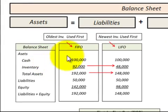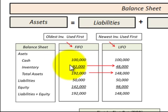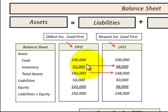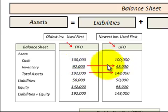Let's look at our balance sheet comparison between FIFO and LIFO. With FIFO, we used our oldest inventory first with the lower costs, so our ending inventory on our balance sheet would include our newest inventory with its higher costs. With LIFO, we used our newest inventory first with its higher costs, so the ending inventory on the balance sheet would be the older inventory with its lower costs. This results in a substantial difference — a reduction in inventory and total assets between FIFO and LIFO.